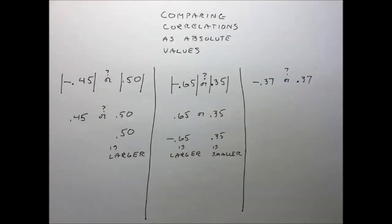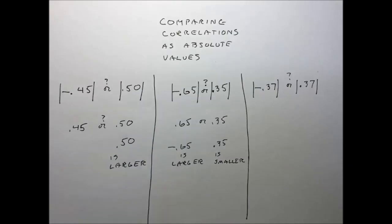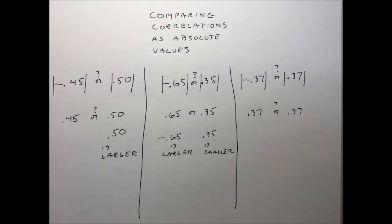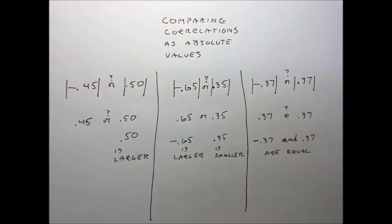And here's an easy one for you. Which is larger? Which is smaller? Minus 0.37 or 0.37? This means, of course, that we're going to consider their absolute values regarding which is the larger or the smaller. Do you see what the problem has turned into now? Indeed, correlations of minus 0.37 and 0.37 are the same size.